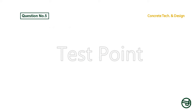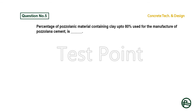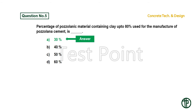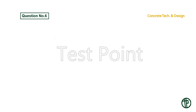Question number 5: Percentage of pozzolanic material containing clay up to 80%, used for the manufacture of pozzolana cement, is — Option A: 30%. Option B: 40%. Option C: 50%. Option D: 60%. Answer is Option A: 30%.